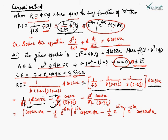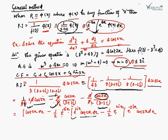Using the formula for phi(x)/(d + a): for the term with (d + 2i), this equals e to the power of −2ix times integration of e to the power 2ix times cos 2x dx. Similarly for (d − 2i), where a = −2i, this becomes e to the power +2ix times integration of e to the power −2ix times cos 2x dx.